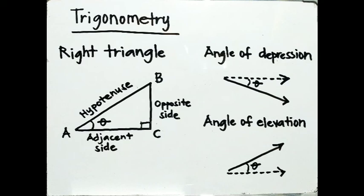A triangle has six basic parts: three sides and three angles. Each is related to each other in such a way that one part — such as a side or angle — must be increased if the other side or angle is increased.